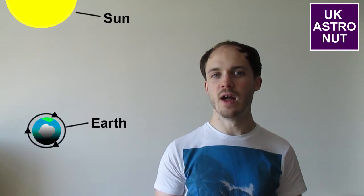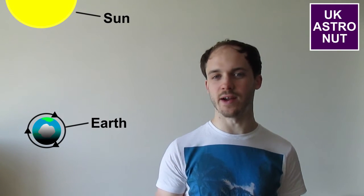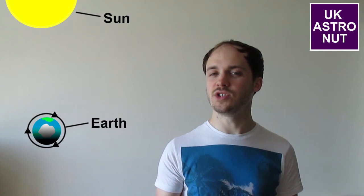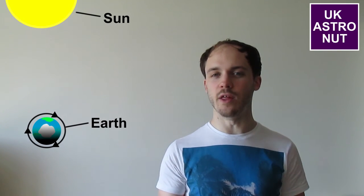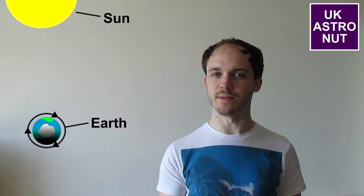But why is it that the length of day can be changed by so much as a second over just a few year period? Well there are several reasons and it's all down to the way the Earth rotates. The fact that we have day and night down here on Earth is due to the fact that the Earth rotates around.